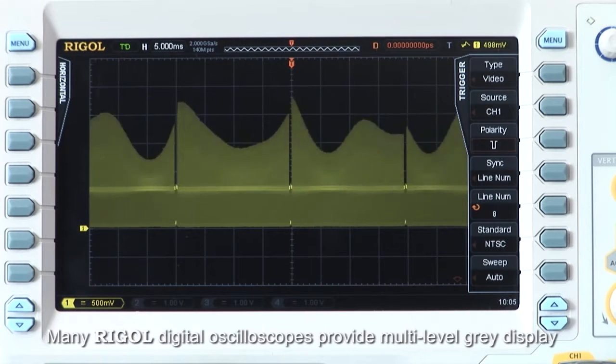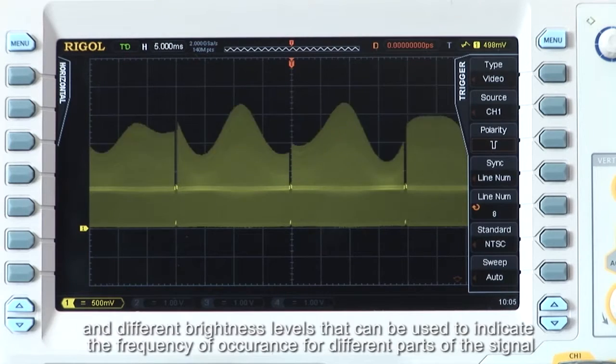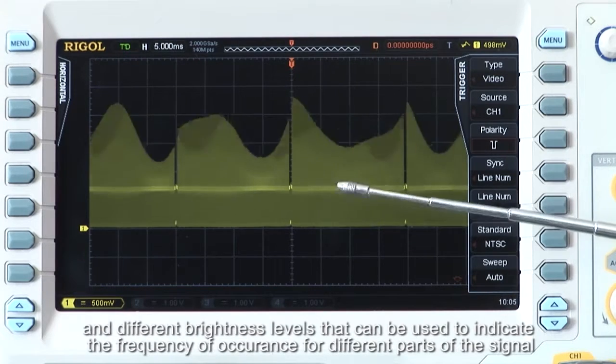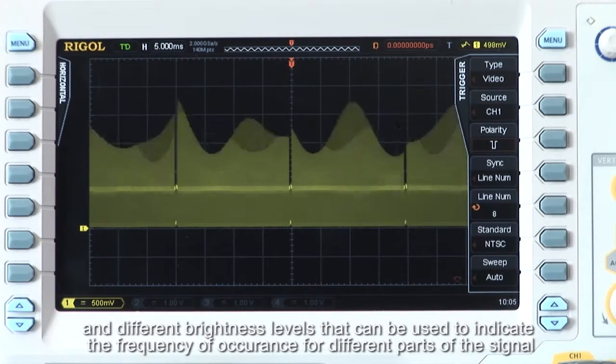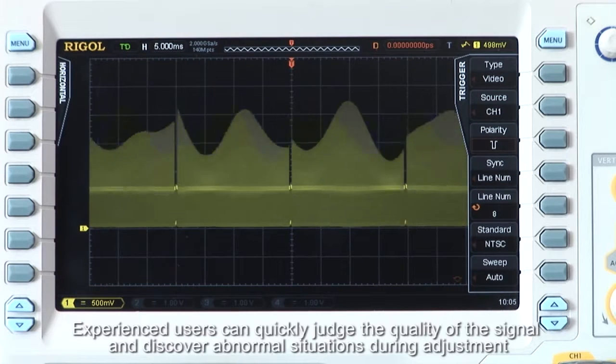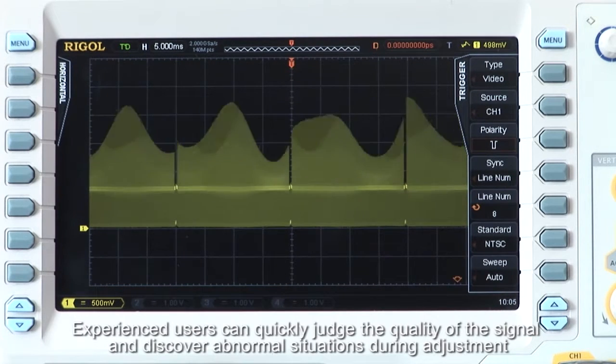Many Rigol digital oscilloscopes provide multi-level gray display and different brightness levels that can be used to indicate the frequency of occurrence for different parts of the signal. Experienced users can quickly judge the quality of the signal and discover abnormal situations during measurement.